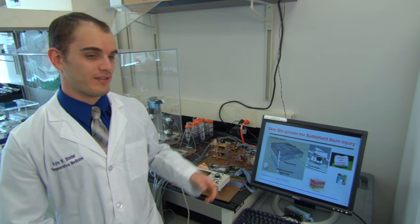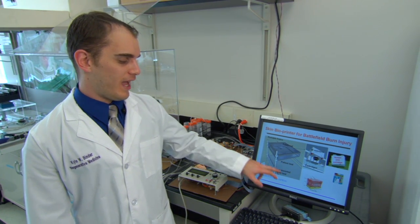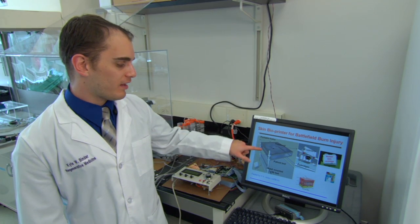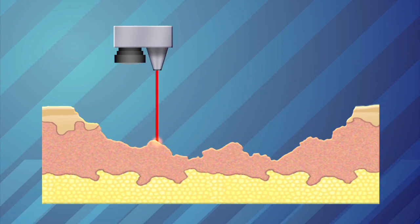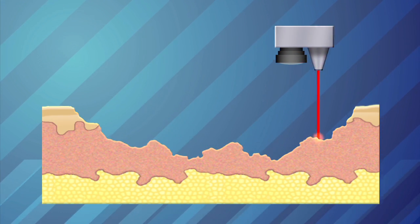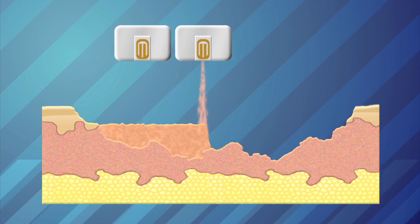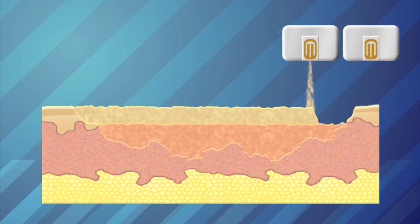So this is how the skin printer will actually work. This is a patient bed. The print head is going to be mounted in the middle on these tracks, which will allow it to move across the body. A camera scans the patient's burn and uses a laser to create a 3D map of the wound. Then the computer tells the printer where to start printing and what kind of cells to use.